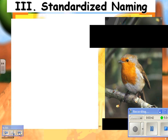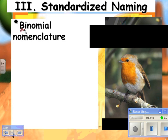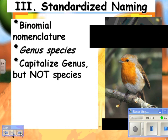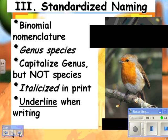So, standardized naming. Here's what you've got to know: binomial nomenclature. 'Bi' means two, so everything has two names. You give it a genus and a species name, and you have to be careful with the way you write it — it's very particular. The genus has to be capitalized for the first letter, and everything else should be lowercase, including the species. If you're typing it, you can italicize; otherwise, you have to underline it.